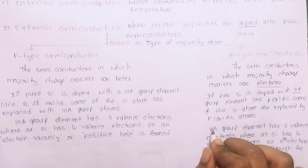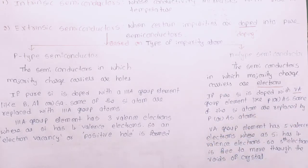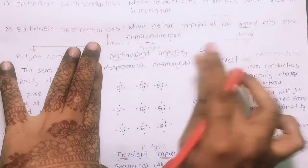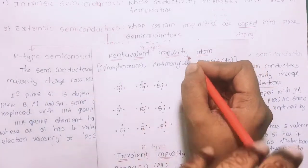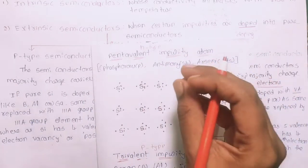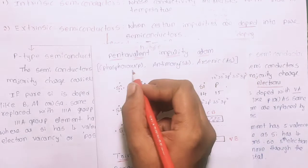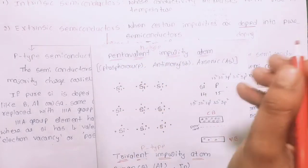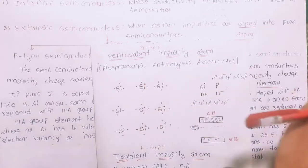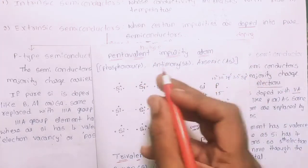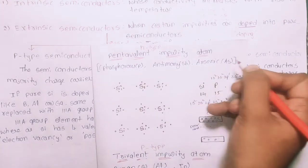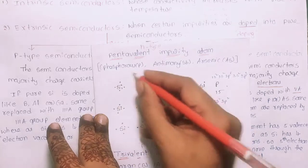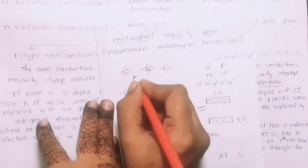The silicon atoms are replaced by phosphorus or arsenic atoms. We will show the structure here. The pentavalent impurity atoms — phosphorus, antimony, arsenic — have 5 electrons in their last valence shell. We use silicon as the semiconductor.